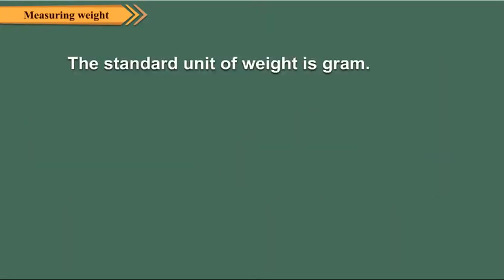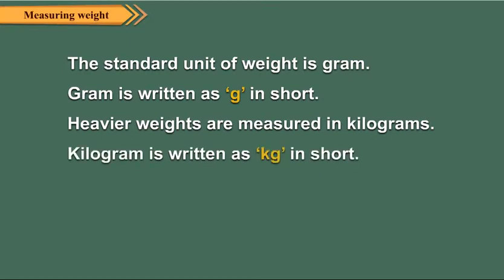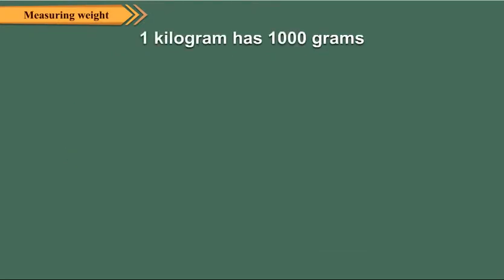The standard unit of weight is gram. Gram is written as g in short. Heavier weights are measured in kilograms. Kilogram is written as kg in short. One kilogram has 1000 grams.